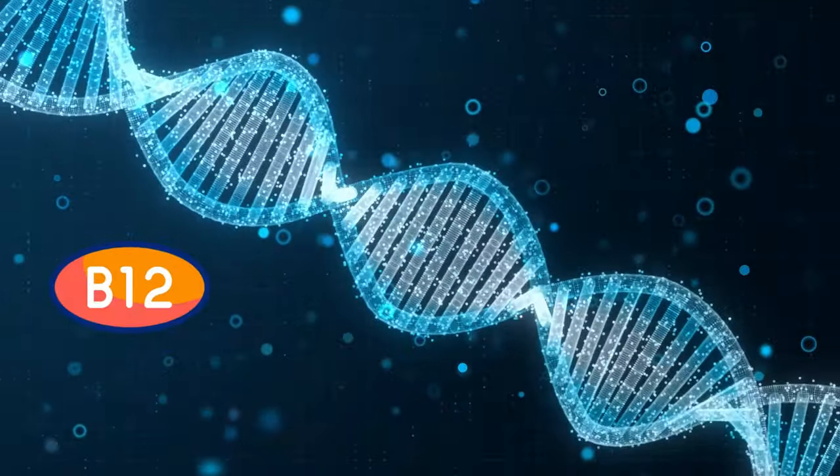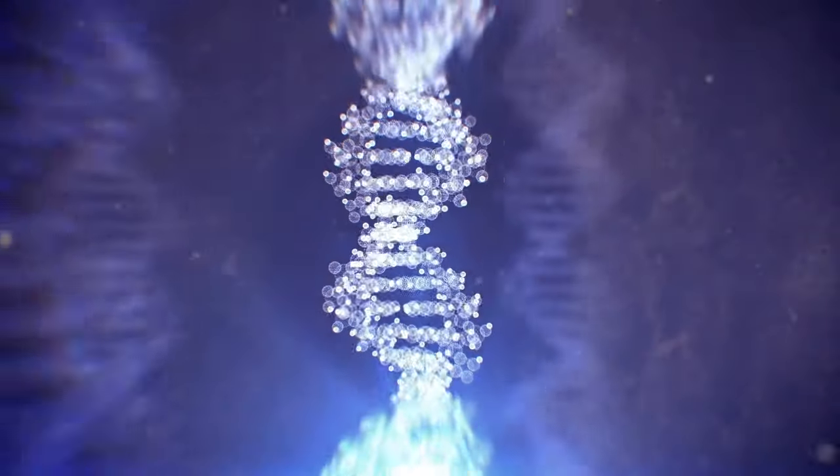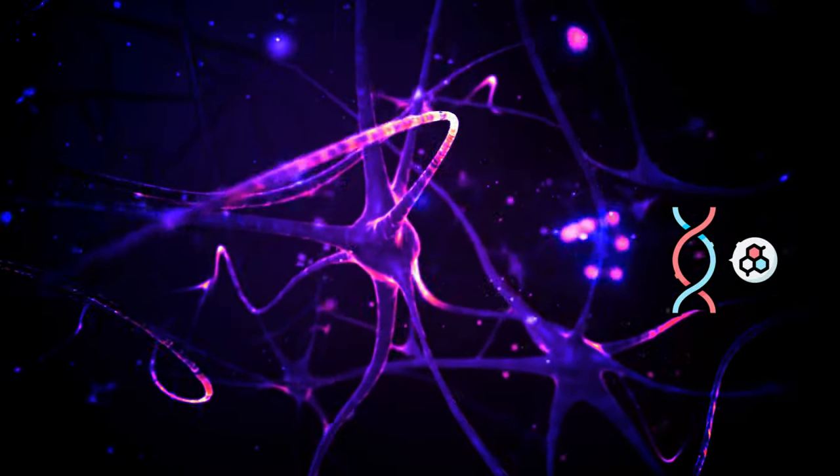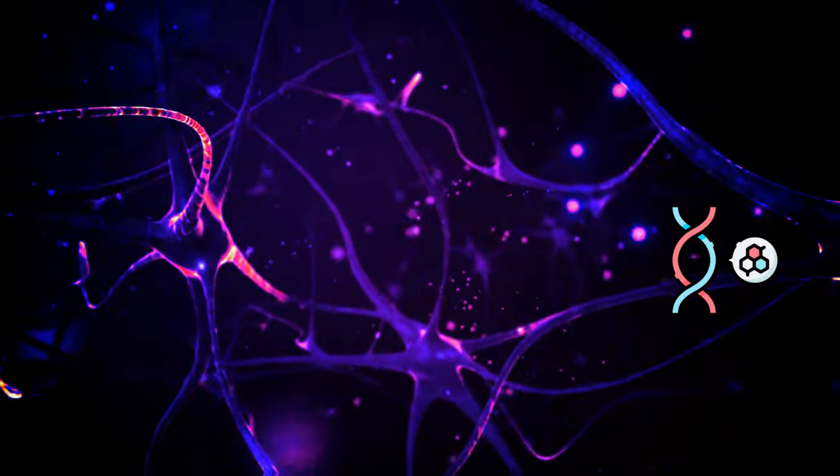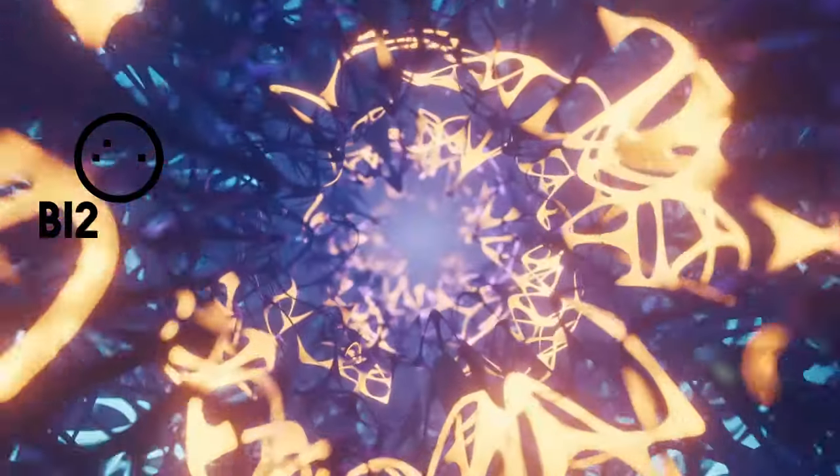Vitamin B12 is also involved in the production of DNA, the genetic material of your cells. Nerve cells in particular need a lot of DNA action to stay healthy and repair themselves. So having enough B12 helps ensure that your nerve cells can regenerate and stay in good shape.